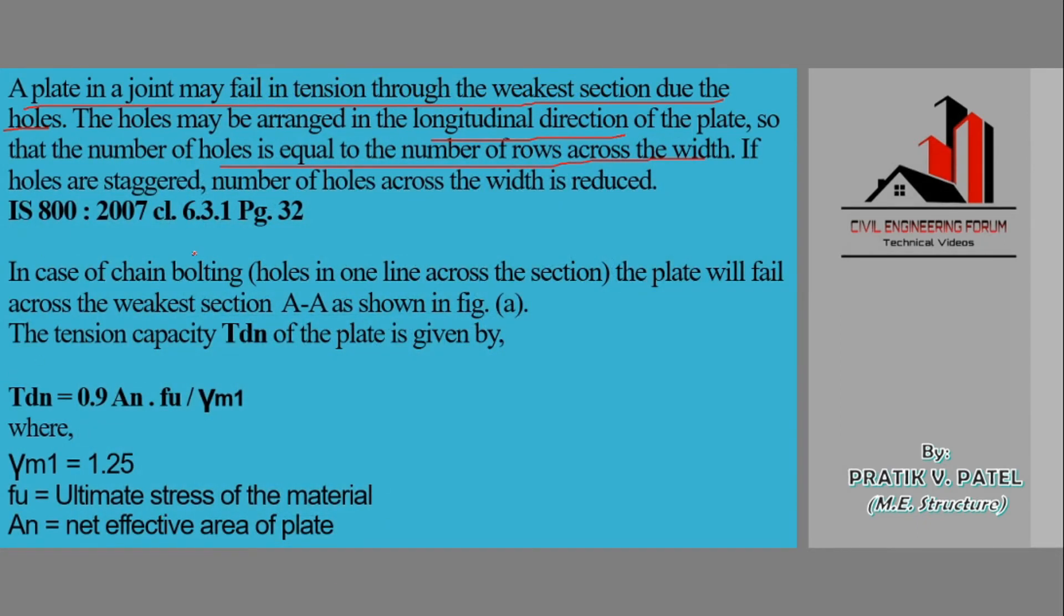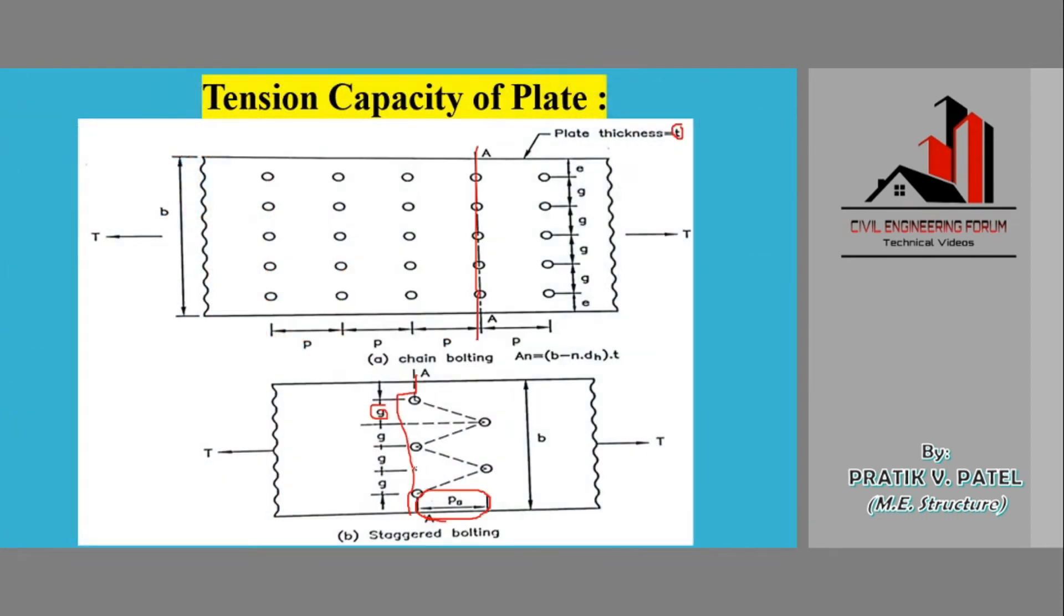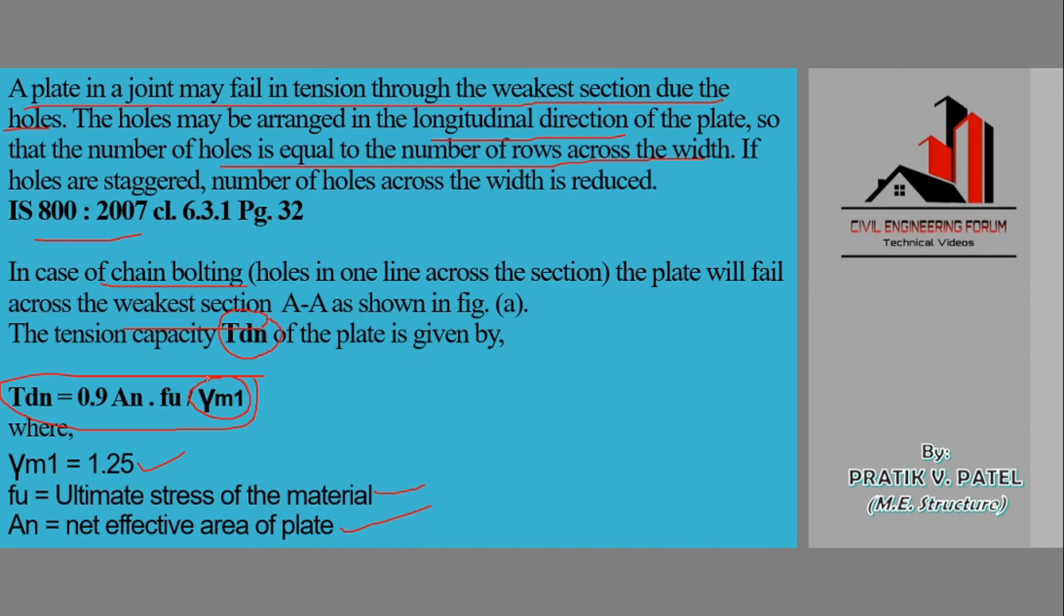This is as per clause 6.3.1, page 32 of IS code. In case of chain bolting, the plate will fail across the weakest section A-A shown in figure. The tension capacity here is Tdn, given by this formula: Tdn equals 0.9 times An times fu divided by gamma m1. Gamma m1 is 1.25 as usual, fu is the ultimate stress of the material, and An is the net effective area of the plate.